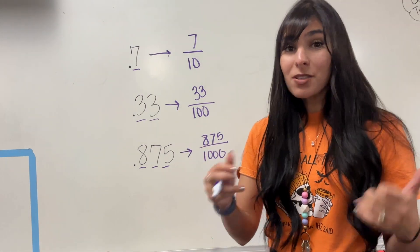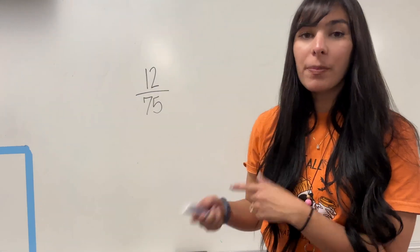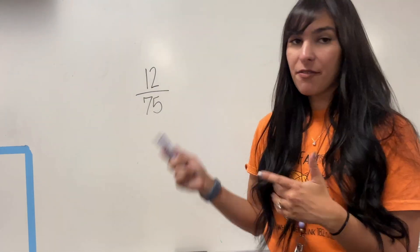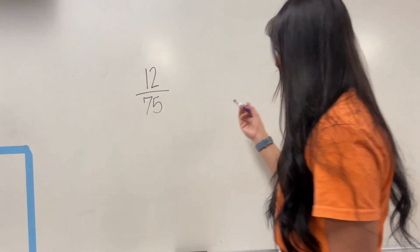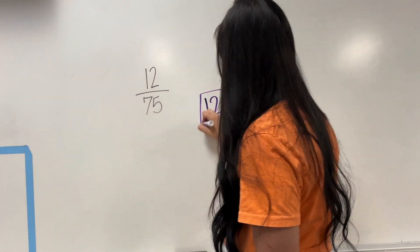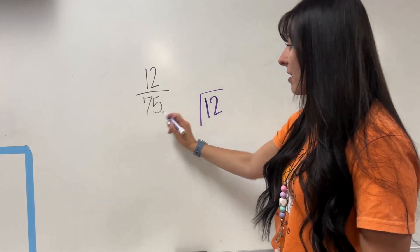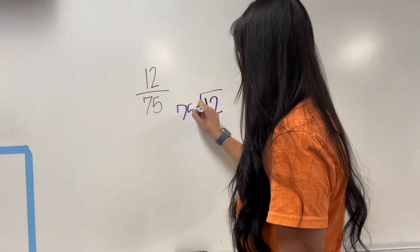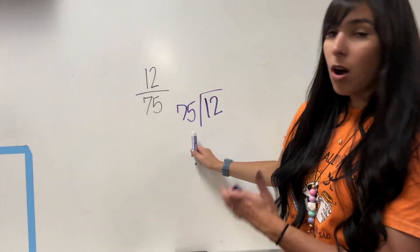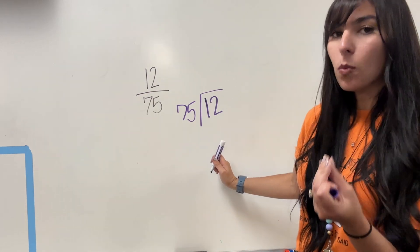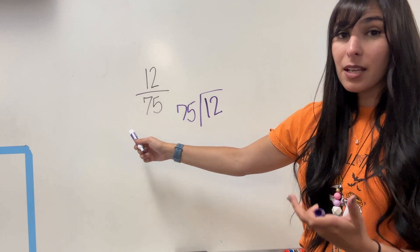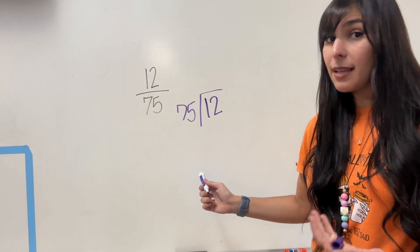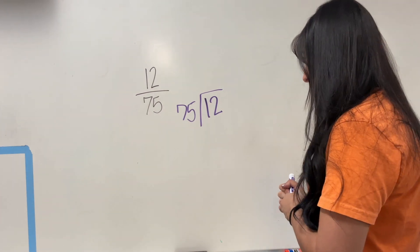All right, so let's go backwards from fraction to decimal. For the first problem, we have a fraction 12 over 75, and I want to convert that to a decimal. My numerator is going to be my dividend that goes in the middle, that goes in the box, and then 75 is going to be my divisor. Now, obviously, this doesn't really work because it's less than 1, but fractions are less than 1, so our decimal is going to also be less than 1. So this is how we start.